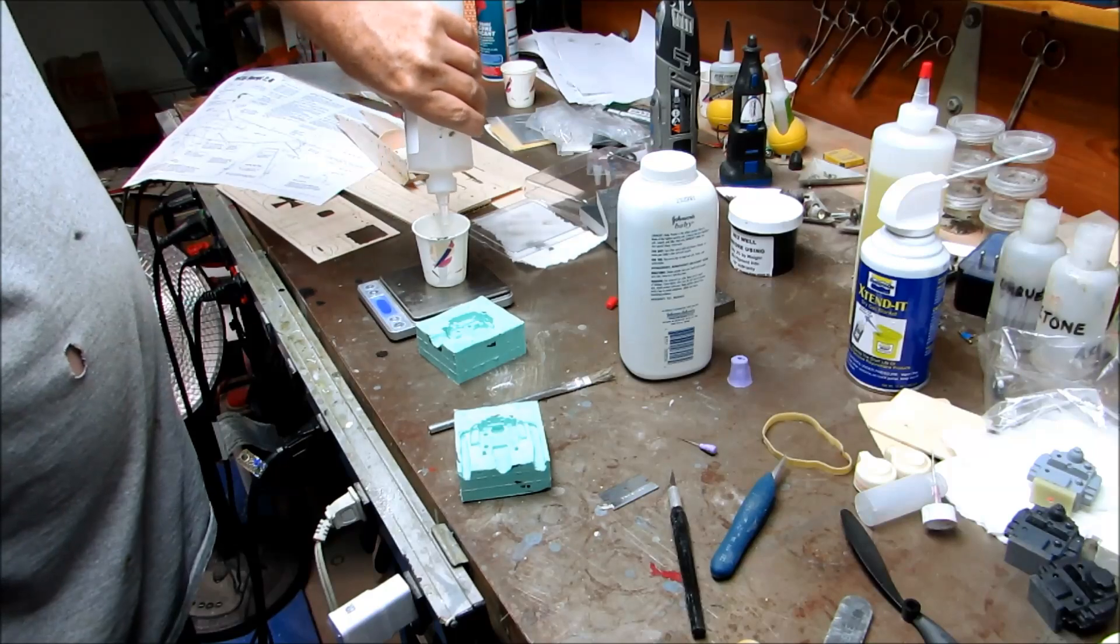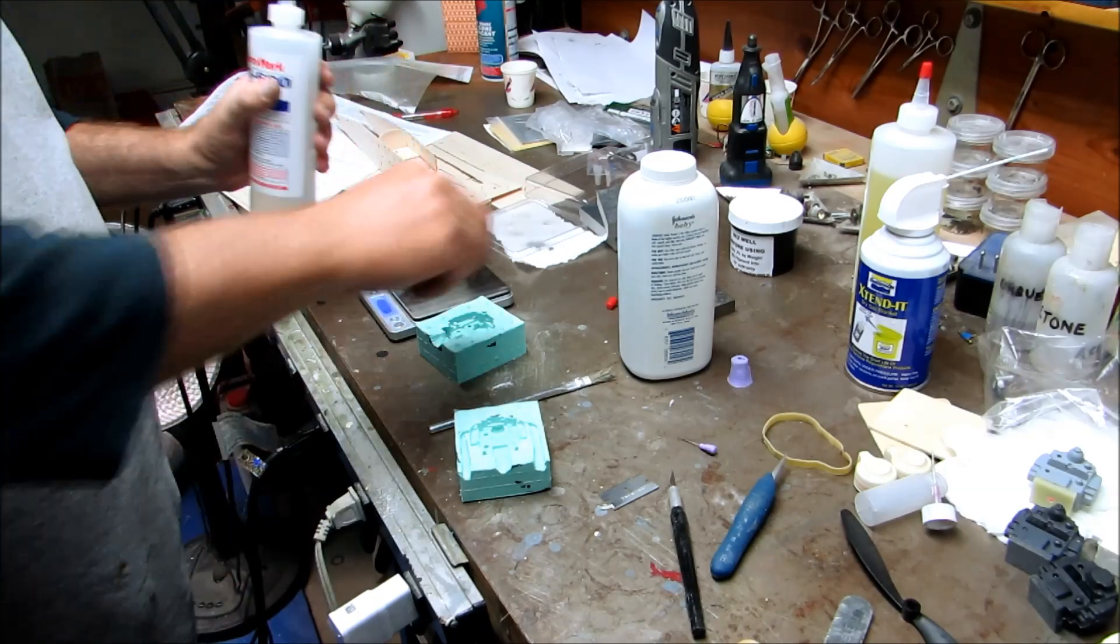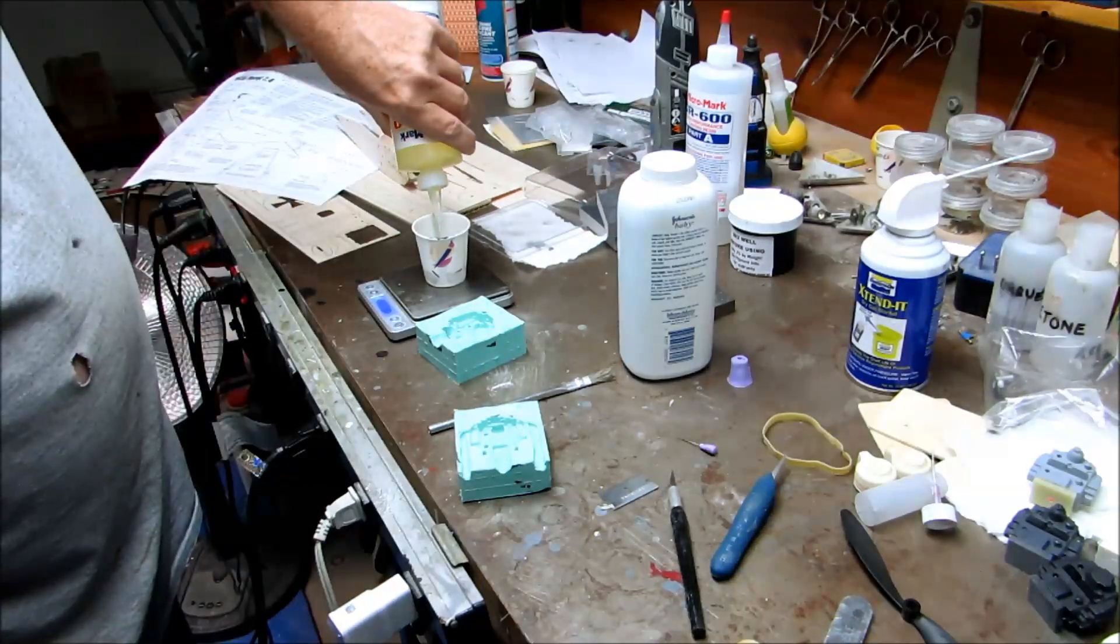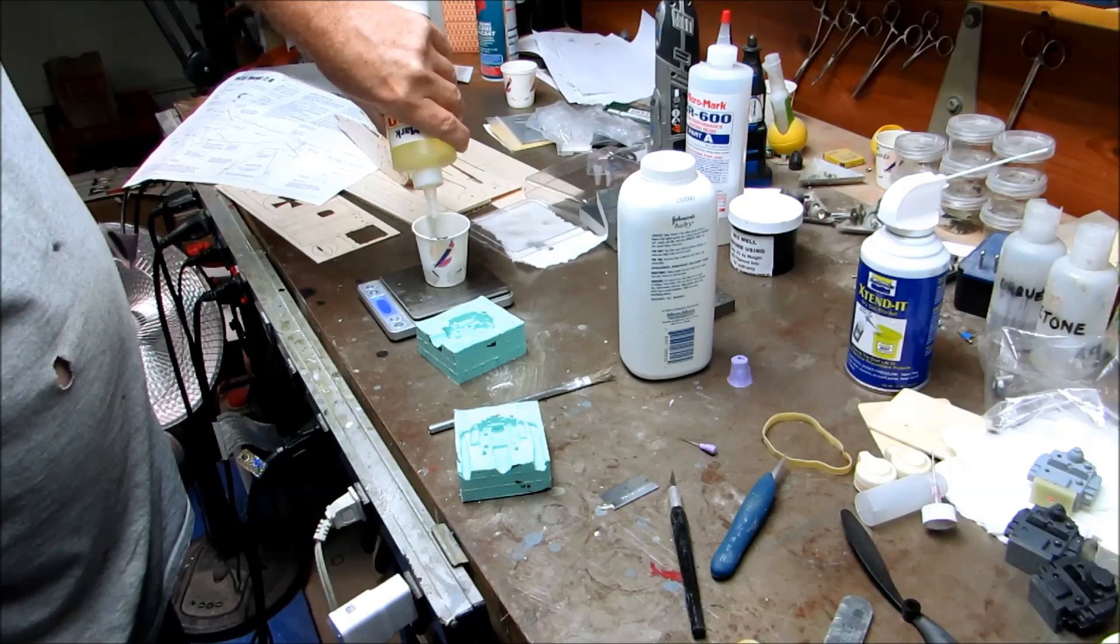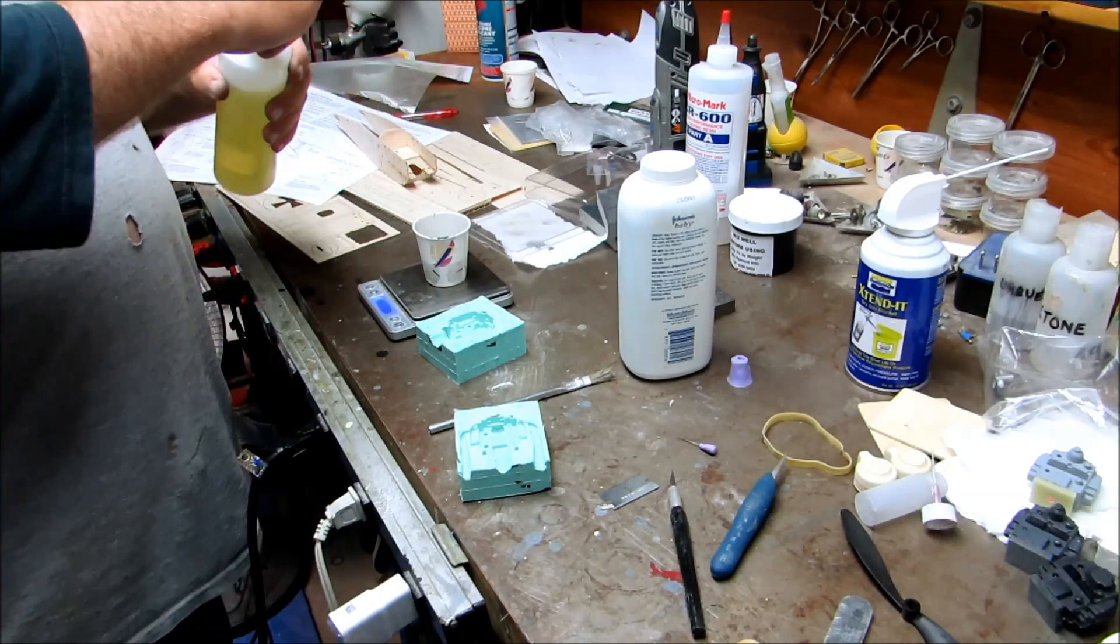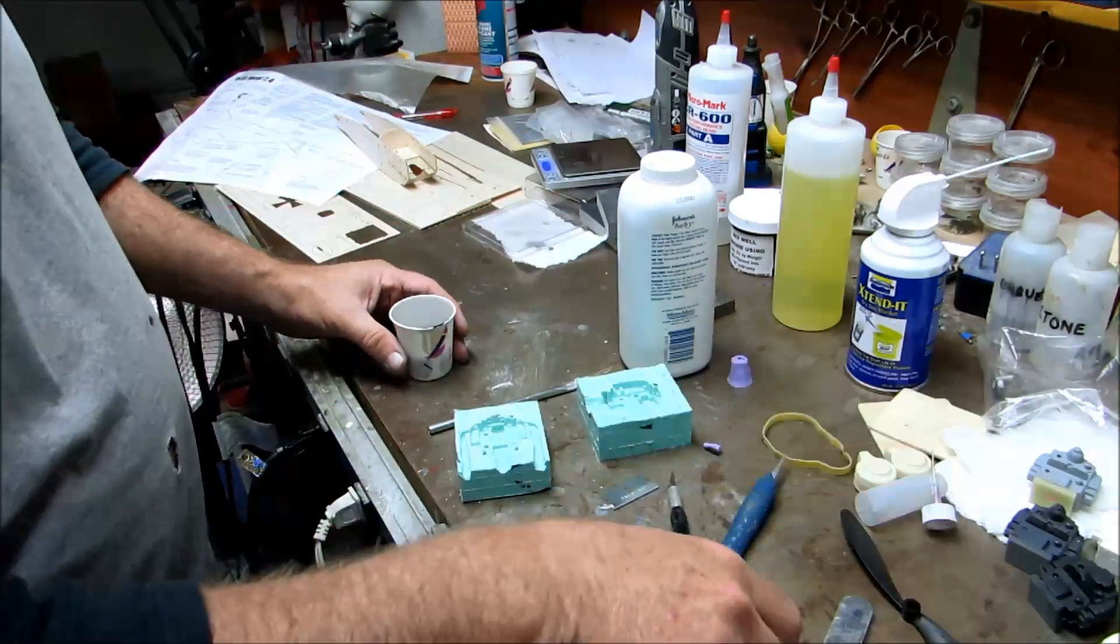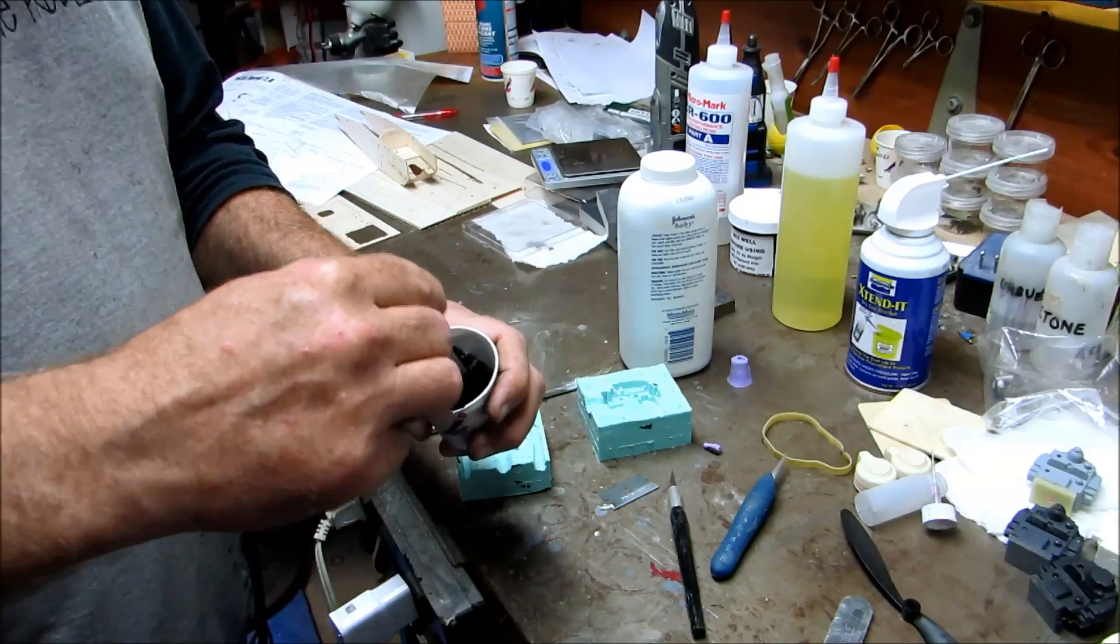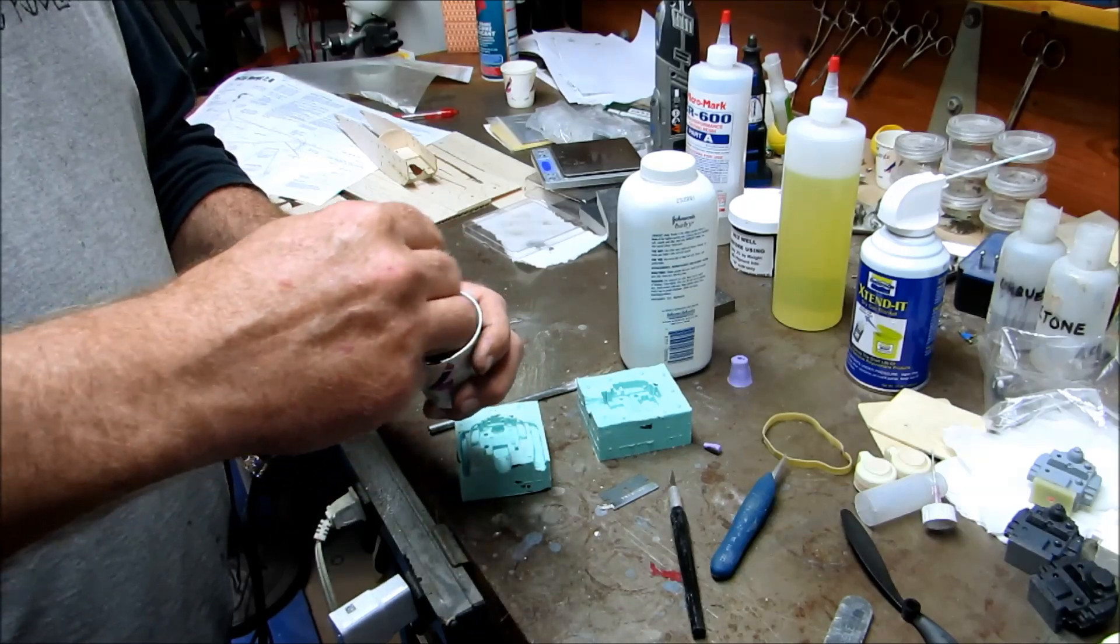So now I'm going to do 16 grams of part A. 16.8 grams. And so now I need to stick it to 34 basically. Just like that. Do a little pre-mixing. I want to get the black goo off the sides. Make sure that it's well incorporated.